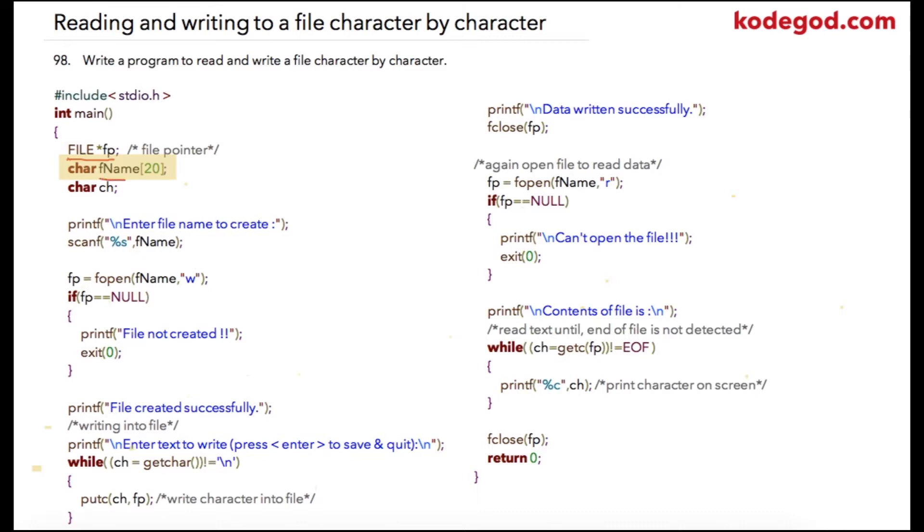Here I am asking user to enter the file name and it will be stored at address location of fname. Then I am using function fopen to which first parameter is fname that is our file name and the second parameter is file mode. Because we want to write content to a file we are going to open that file into write mode.